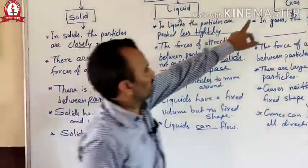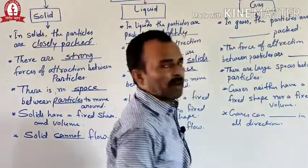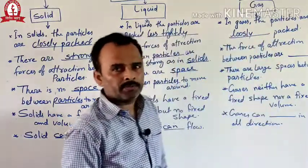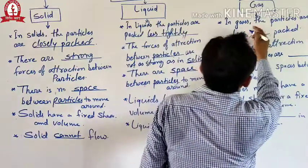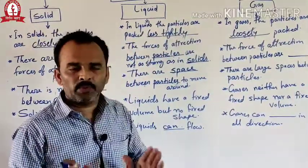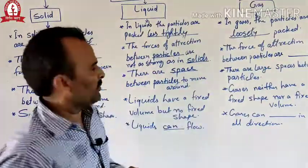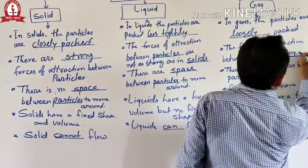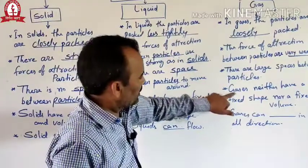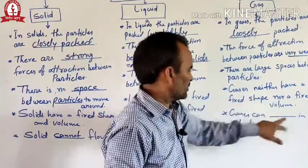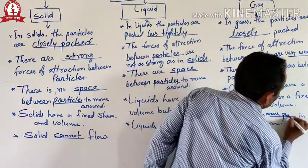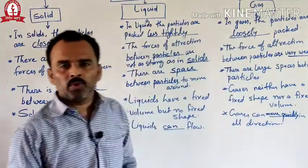After liquid, the next state of matter is gases. In gases, the particles are loosely packed. The force of attraction between particles are very weak. There are large spaces between particles, and gases neither have a fixed shape nor a fixed volume. Gases can move quickly in all directions.